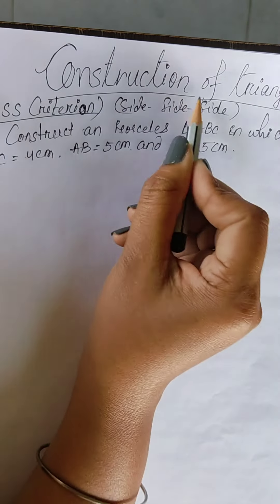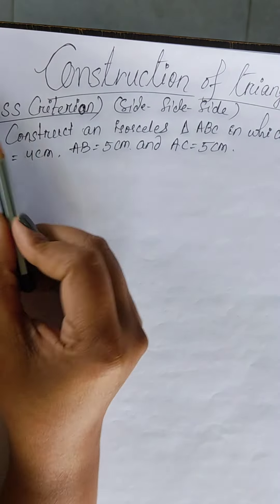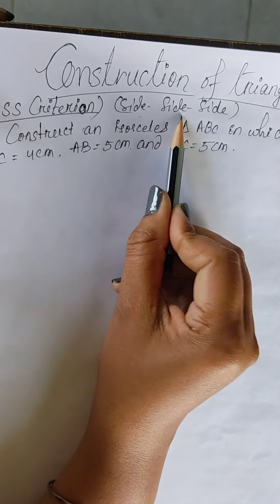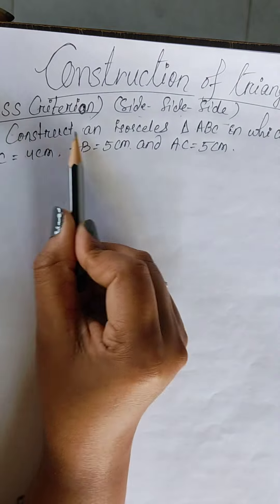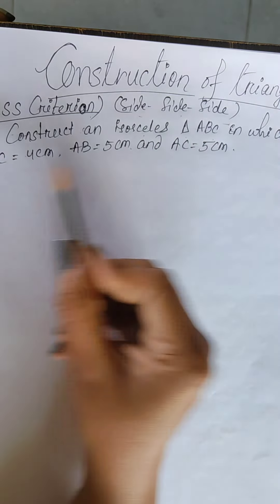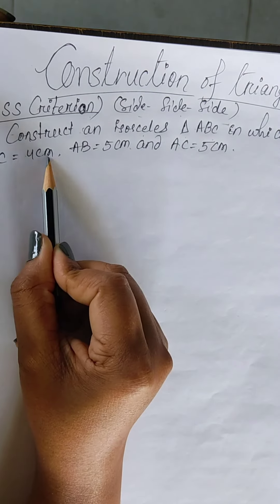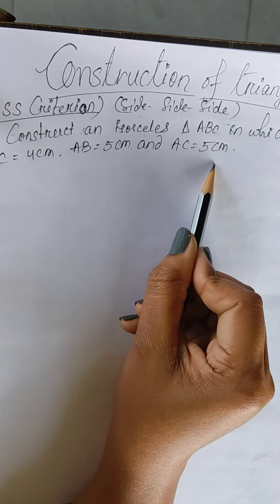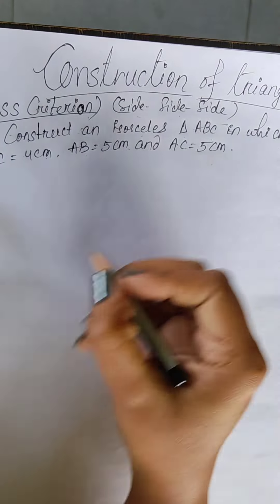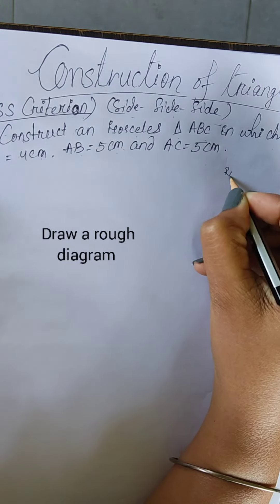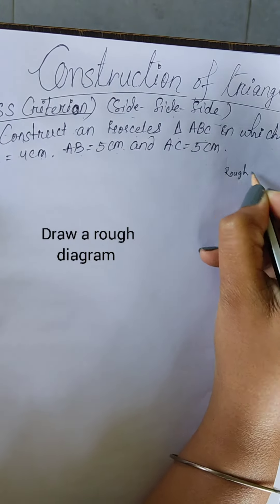Hi, in today's video we are going to learn construction of triangle SSS criteria, means side-side-side. Construct an isosceles triangle ABC in which BC = 4 cm, AB = 5 cm, and AC = 5 cm.